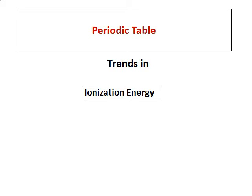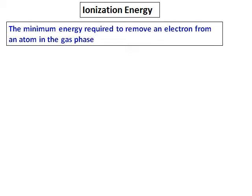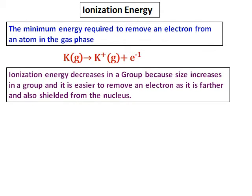Continuing with periodic table trends, we will learn about the trends in ionization energy. Ionization energy is the minimum energy required to remove an electron from an atom in the gas phase. For example, if the element we consider is potassium, we have to have that in gas phase, and the energy required to remove an electron and convert K to K+ is the ionization energy.